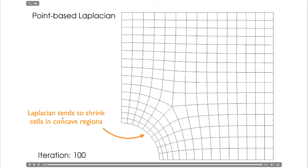One thing to note is the Laplacian method, in regions that are concave, it tends to make the cells smaller in those regions, and larger in convex regions. That's just one artifact of the method.